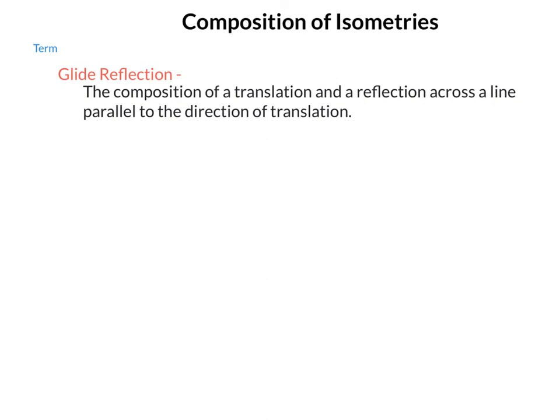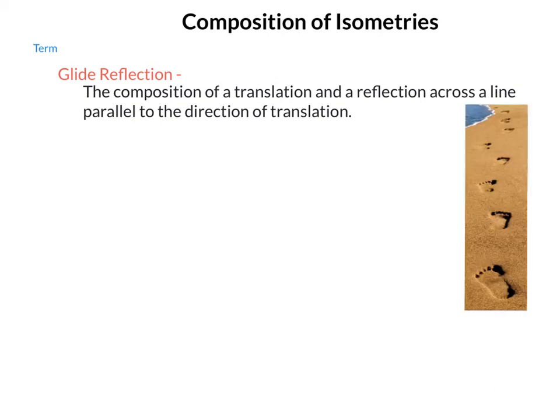So a glide reflection is the composition of a translation and a reflection across a line parallel to the direction of translation. So if I translate to the right, then I need to have a line of reflection that runs right to left so I can move across it. If I translate up or down, then I need to have a vertical line of reflection that I translate across. We do see this quite often in our daily lives, such as when we see a series of footprints. Because what the footprints do is the foot moves forward and then reflects across a central line in order for our other foot to go down. Our central line is our line of balance. Then we move forward and the other foot comes down reflected across that line of balance, forward and reflect across, forward and reflect across.